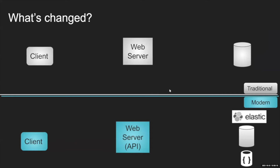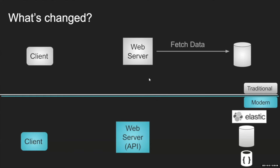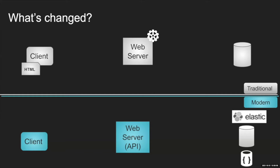What is the difference between traditional web servers and APIs? In traditional applications, the client would send an HTTP call to get a specific web page from the web server — for example home.jsp. The web server would fetch data from the database to create a visual HTML representation, so the rendering process was done on the web server. The client was just a browser presenting the HTML page.